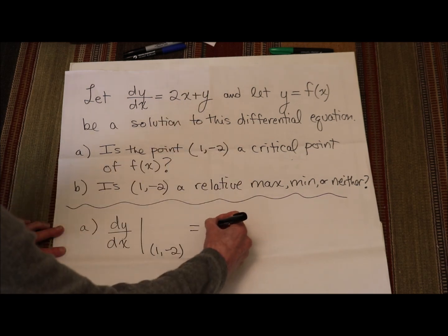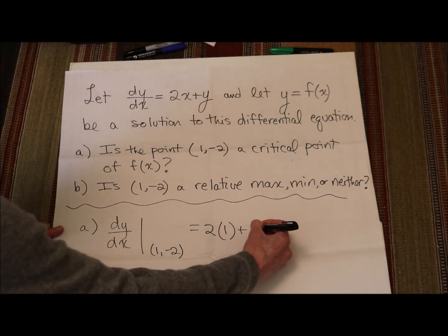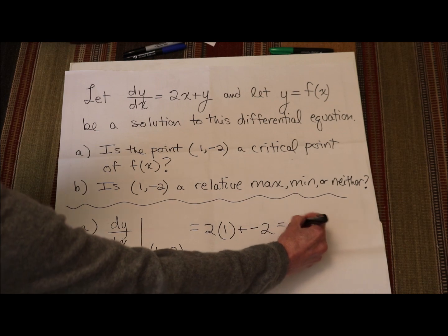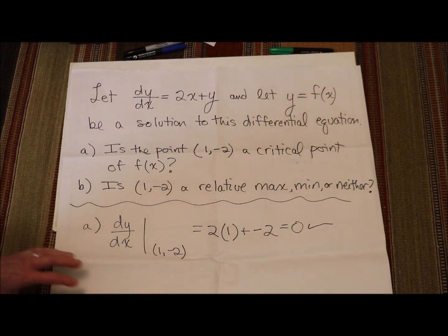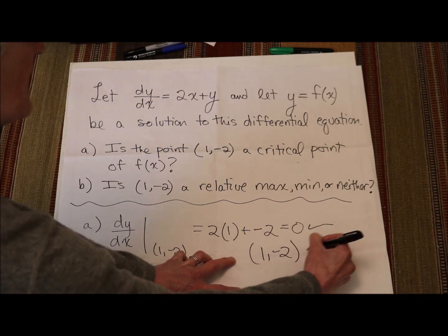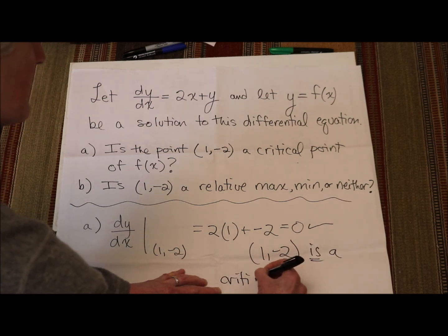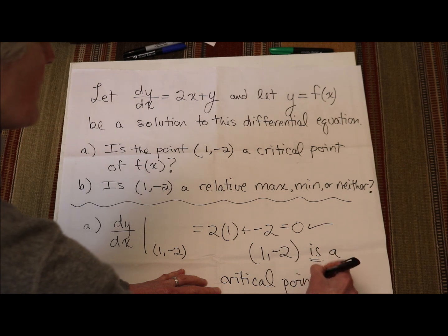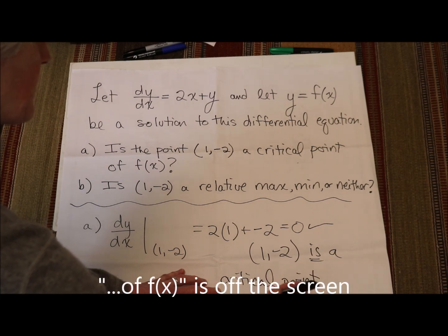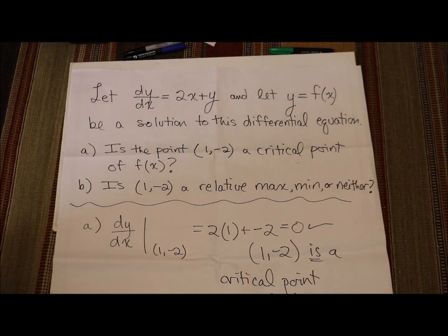It's 2 times x, so 2 times 1, plus y, so plus negative 2. My derivative equals 0. Therefore, (1, -2) is a critical point of f of x because the derivative is 0.